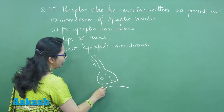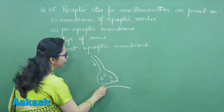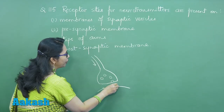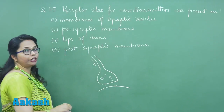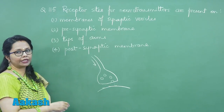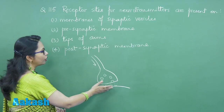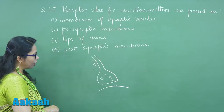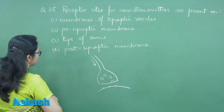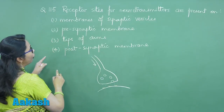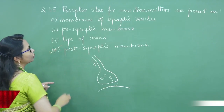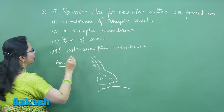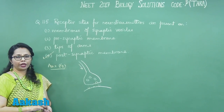The neurotransmitter is released into the synaptic cleft, and on the post-synaptic membrane there are receptors to which it binds. Depending on whether the neurotransmitter is excitatory or inhibitory, that kind of effect will occur in the post-synaptic neuron. So the receptor sites are located on the post-synaptic membrane, and our correct answer is 4.